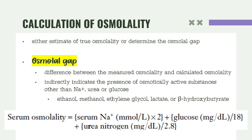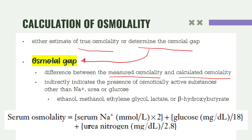If no osmometers are available, we can compute osmolality. The calculation can either estimate true osmolality or determine the osmolal gap — the difference between measured and calculated osmolality. The osmolal gap indirectly indicates the presence of osmotically active substances other than sodium, urea, and glucose — such as ethanol, methanol, ethylene glycol, lactate, or beta-hydroxybutyrate.